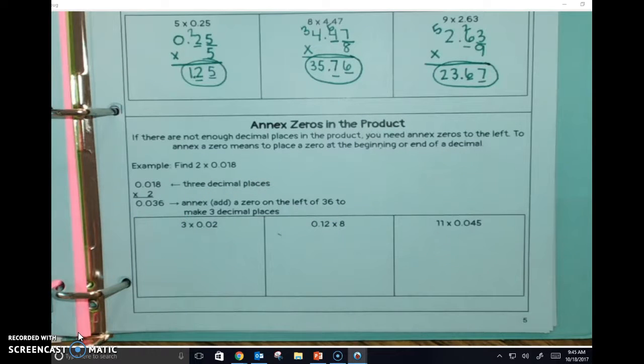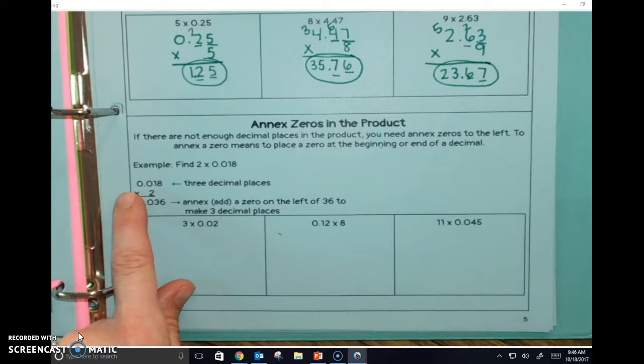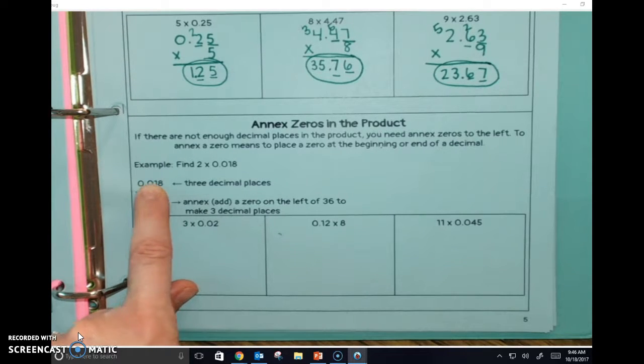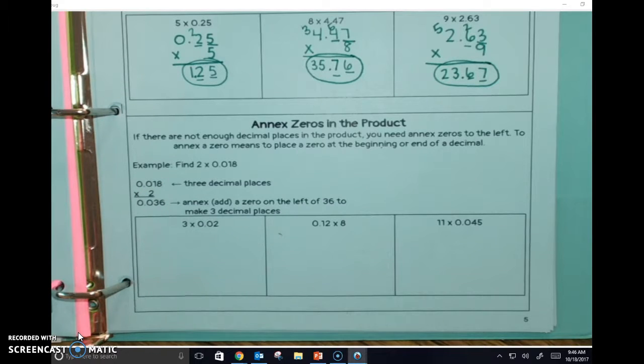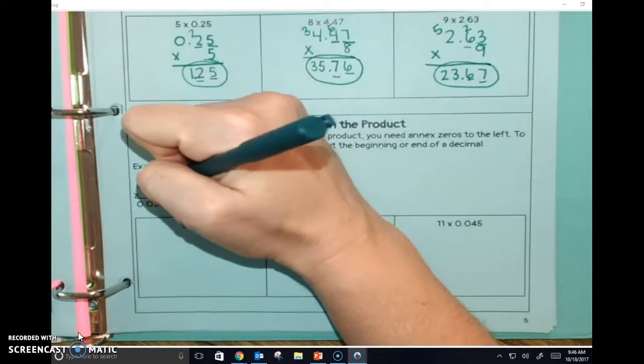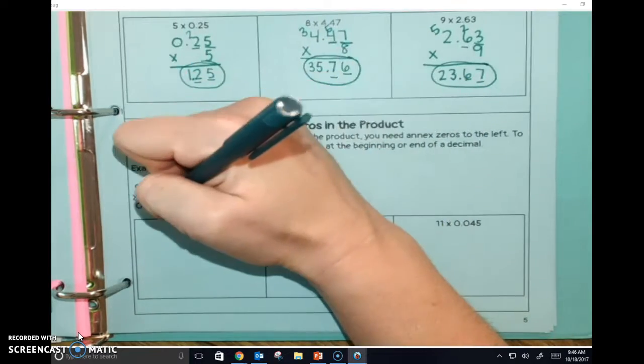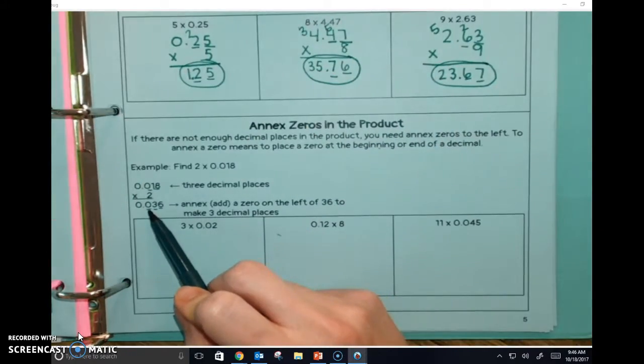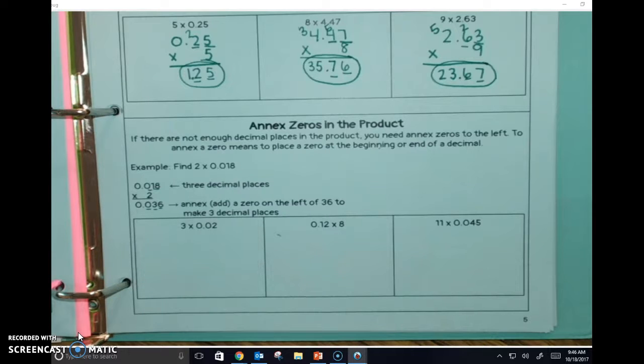Down here we're going to annex. Do you think they know what the word annex means, Nolan? Like add. We're going to be adding a zero. So if there are not enough decimal places in the product, you need to annex zero to the left. To annex a zero means to place a zero at the beginning or end of a decimal. If we take a look at this example, we have 0.018 times 2, and 18 times 2 is 36, right? Do you see how there's one, two, three places? So we need one, two, three down here. They added a zero right in front of the 36.